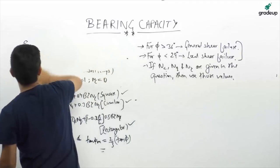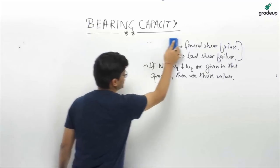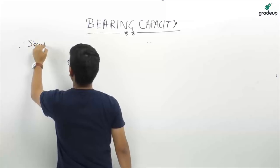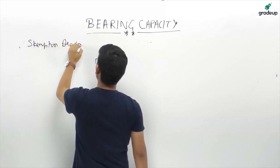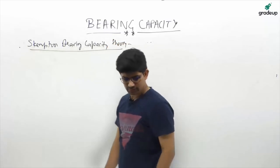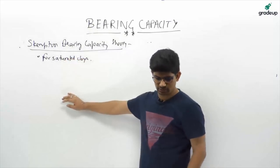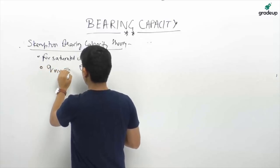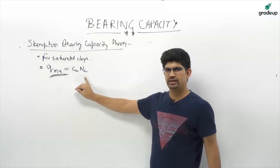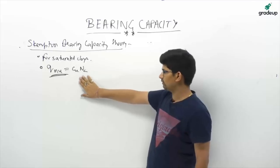Now Skempton's bearing capacity theory. This is applicable for saturated clays only — not for cohesionless soils. The formula is: Q_net_ultimate = Cu × Nc. Note carefully that Skempton directly gives Q_net_ultimate, while Terzaghi gave Q_ultimate.